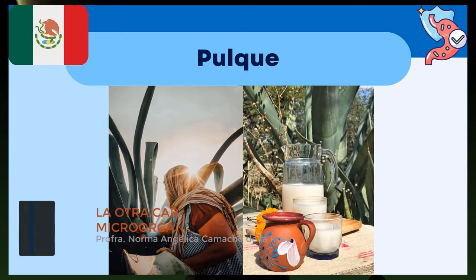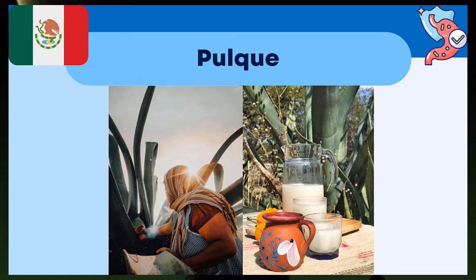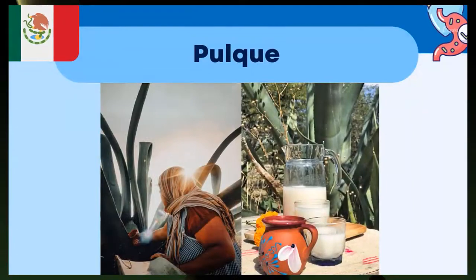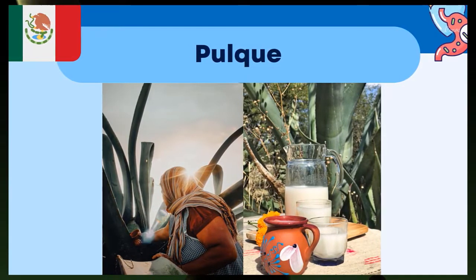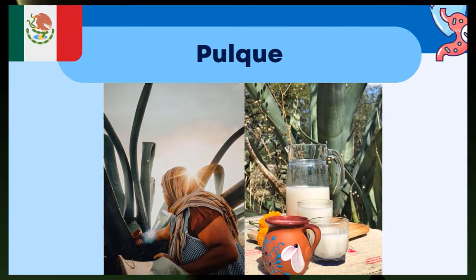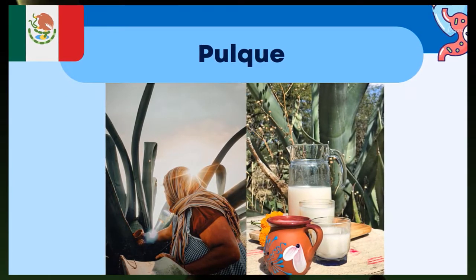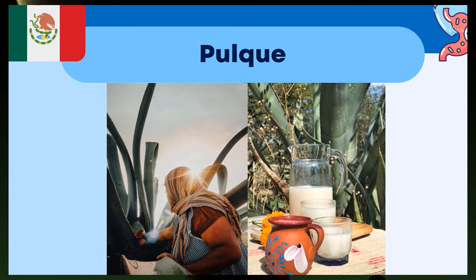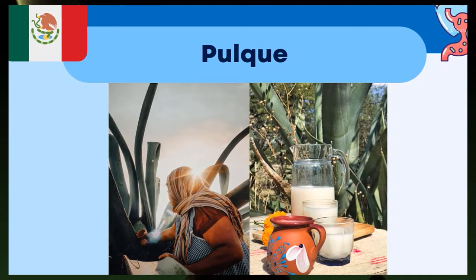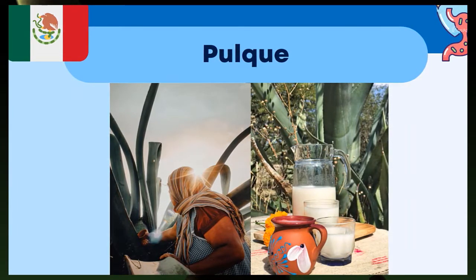Nuestro país no es la excepción. El pulque es una bebida alcohólica tradicional mexicana, no destilada, fermentada, producida por la fermentación de la savia —conocida como aguamiel— extraída del maguey. Es considerado una bebida saludable por su contenido de nutrientes y también una medicina tradicional para el tratamiento de trastornos gastrointestinales e infecciones intestinales. Durante la fermentación del pulque, el desarrollo de acidez, alcohol y viscosidad definen sus propiedades sensoriales, desarrollando un ambiente enriquecido con bacterias lácticas dominantes, incluyendo diversas especies de Leuconostoc como potencial probiótico.